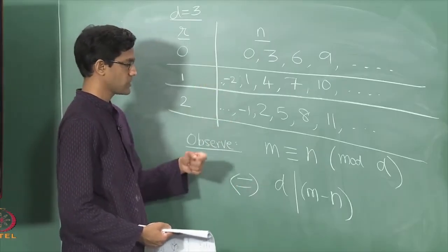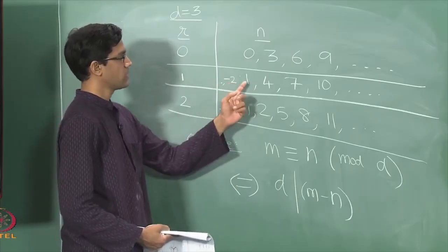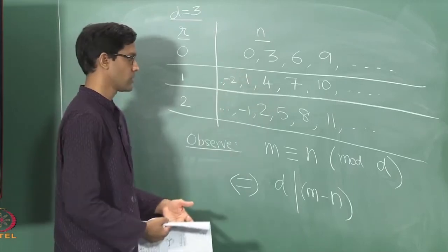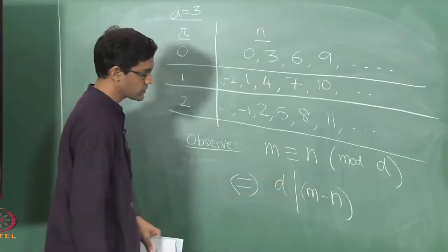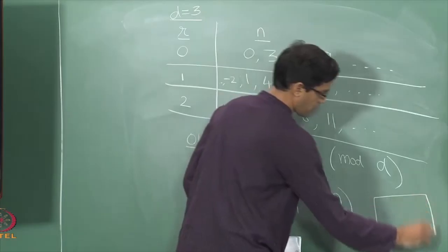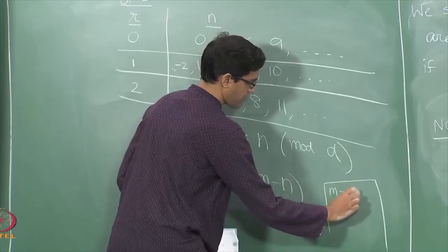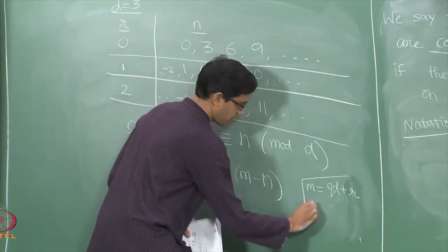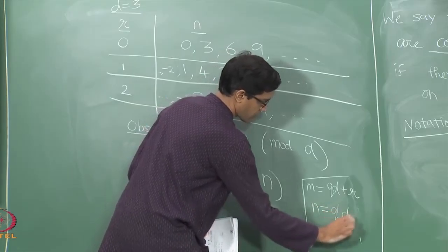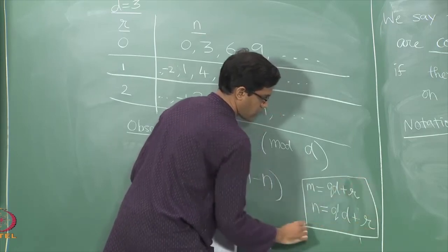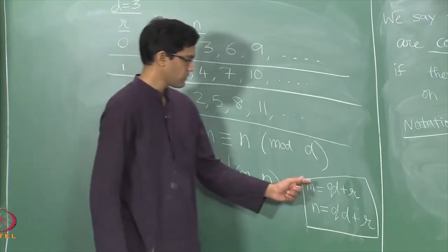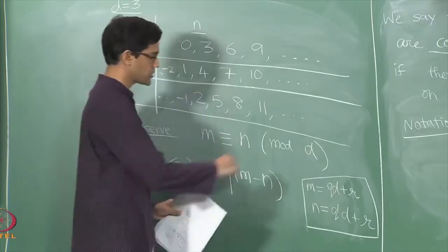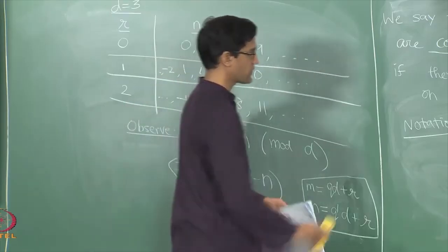We are already seeing this by example: if I take any two numbers from the same remainder row, their difference is always a multiple of 3 — so the difference is divisible by d. Let me sketch the proof. Say m gives remainder r when divided by d, so m equals qd plus r. Similarly, n divided by d gives quotient q prime with the same remainder r — that is what being congruent means. Now if I subtract m minus n, the remainders cancel, and what is left is just a multiple of d.